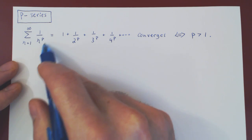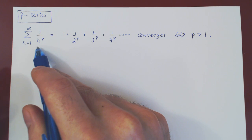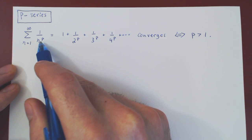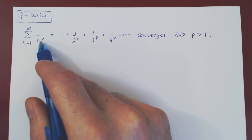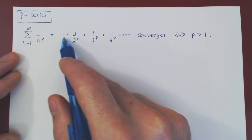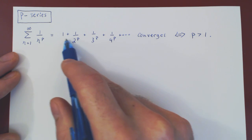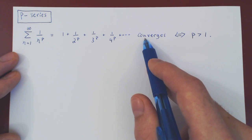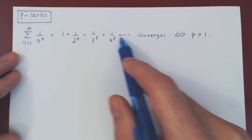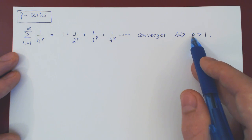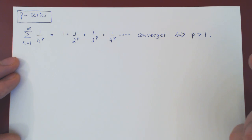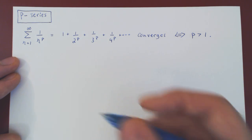These series are remarkably simple in terms of their convergence. They are, in general, very difficult to evaluate when they do converge, but to figure out when these series converge, the result is very simple: a p-series will converge if and only if p is strictly greater than 1. So let's prove this result.